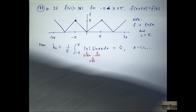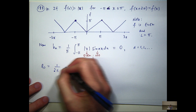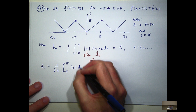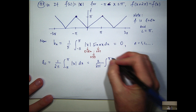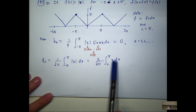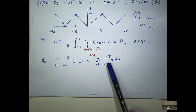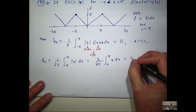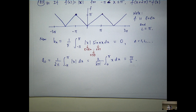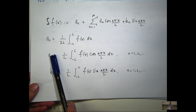Let's calculate a-nought using the formula. We're integrating an even function on a symmetric interval, so I'm going to double the integral and integrate from zero to pi. From zero to pi, the absolute value of x is just x, so we don't need to worry about the absolute value signs. This is a reasonably easy integral; you'll get a-nought = π/2.